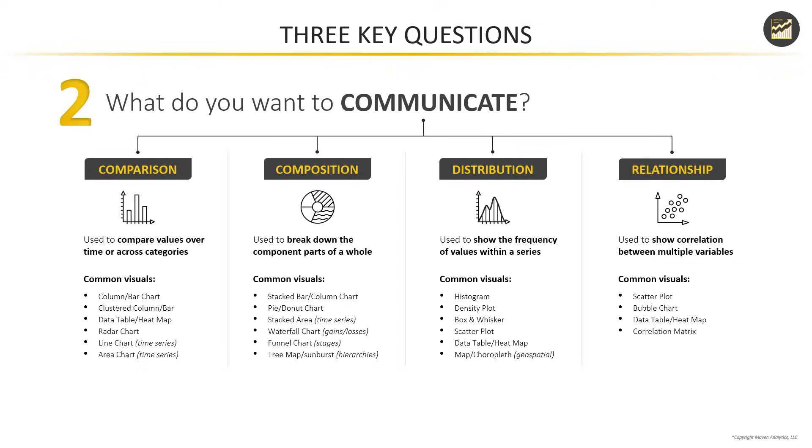Last but not least we have relationships, which are about showing correlation between multiple variables. Scatter plots and bubble charts are far and away the most common visuals in this category. You could also potentially use data tables, heat maps, or correlation matrix as well. This can be a handy guide to help point you towards the right visuals to choose based on what you're trying to communicate.